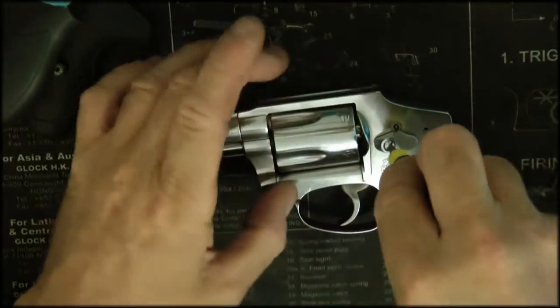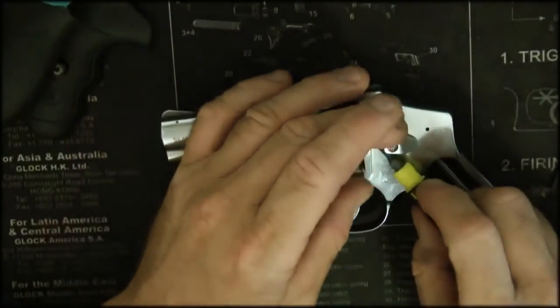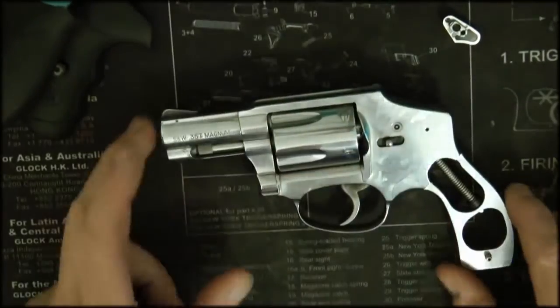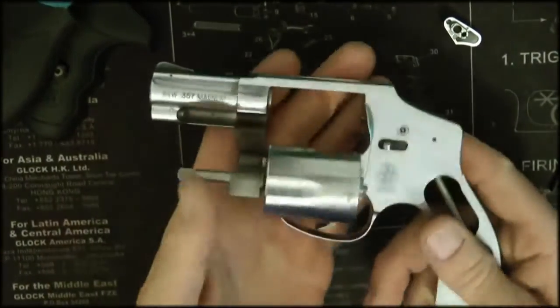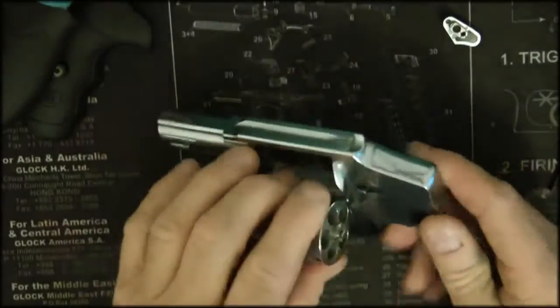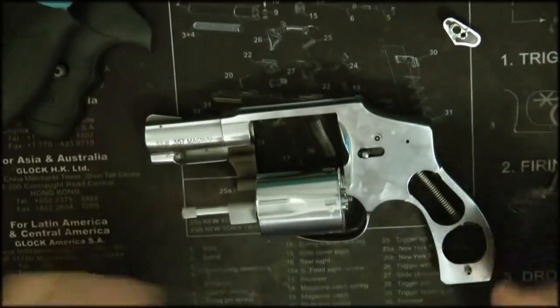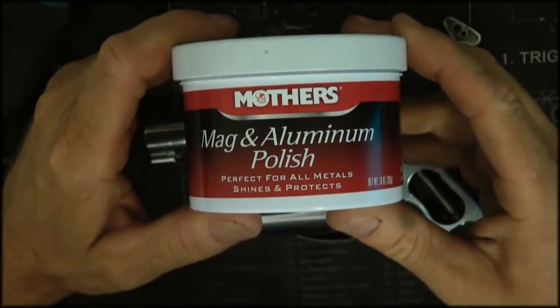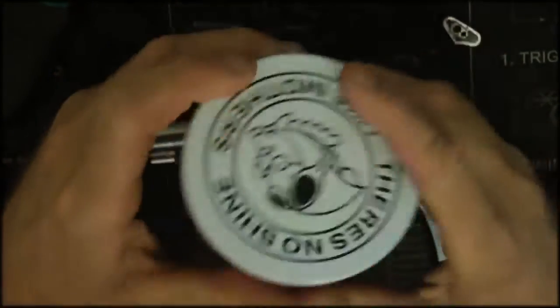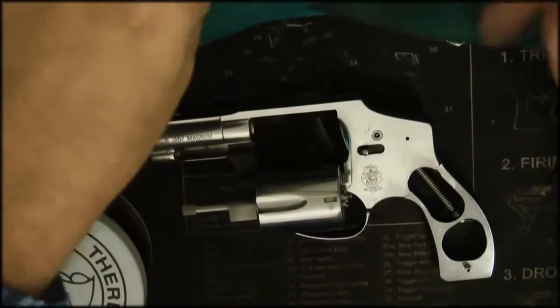These are normally satin finish. So basically, of course make sure the gun is empty. I would probably just take it like this. You want to get this, the stuff: Mother's Mag and Aluminum Polish. You need a rag, you could cut it up into some strips if you want so you have some clean areas.